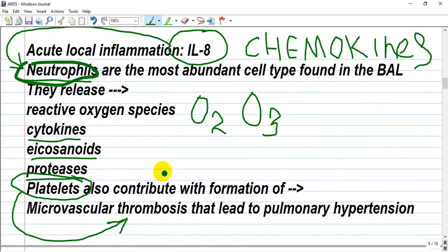By pathogenesis, we have acute local inflammation. Interleukin-8 provides this acute local inflammation, which is called chemokines, which will lead to secretion or increased number of neutrophils and increased work of neutrophils. Neutrophils migrate to these sites in the lungs and are found as the most abundant cell type by bronchoalveolar lavage. Neutrophils are not simple cells from the immune system. They release a lot of cytokines, eicosanoids, proteases, and even reactive oxygen species for bacterial destruction.